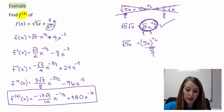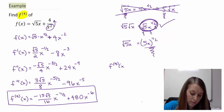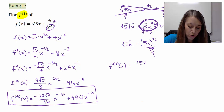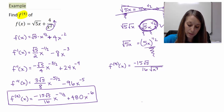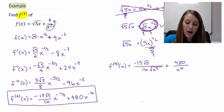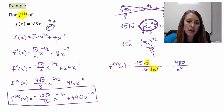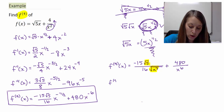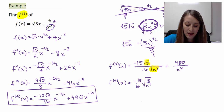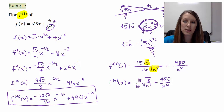If you'd like to practice rewriting it, I'd encourage you to do so. Rewriting without exponential format: negative 15 root 5 over 16 times x to the negative seven-halves becomes negative 15 root 5 over 16 times 1 over the square root of x to the 7th. Plus 480 over x to the 6th in the denominator. You can also combine the roots as negative 15 over 16 times the square root of 5 over x to the 7th, though that's not necessarily simpler.